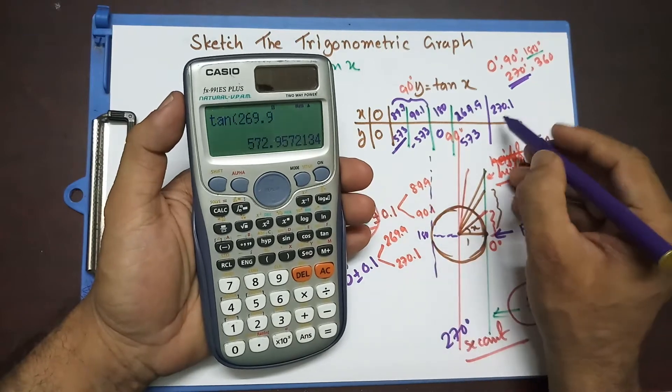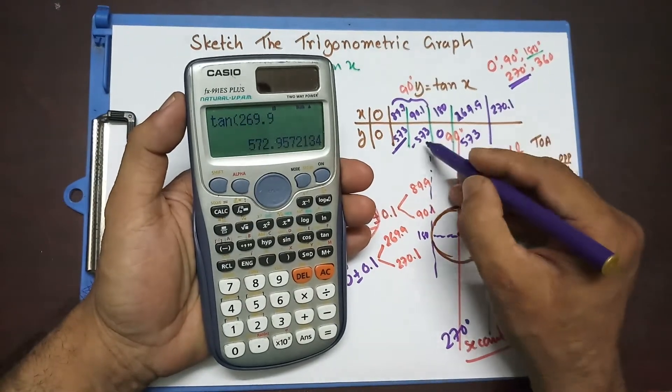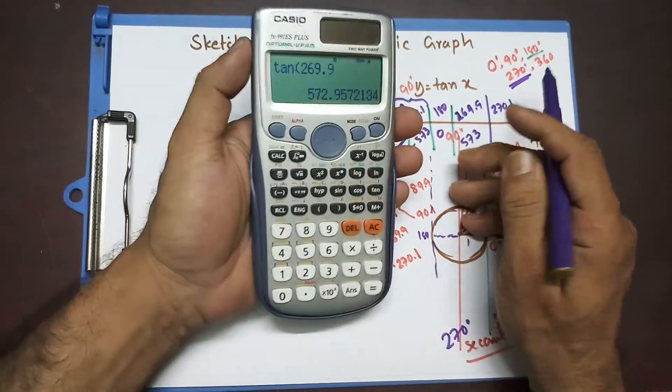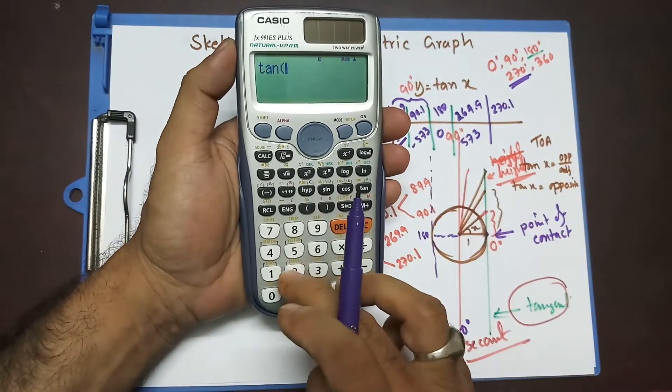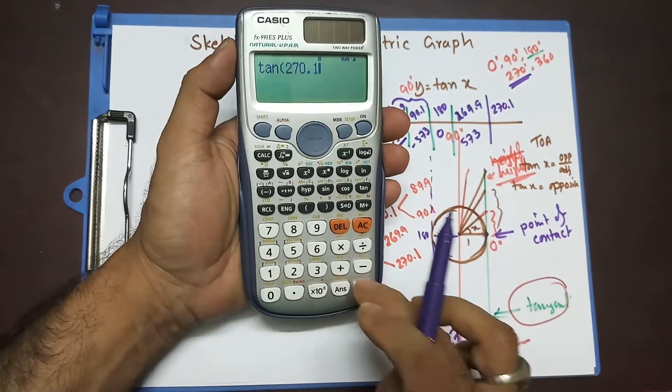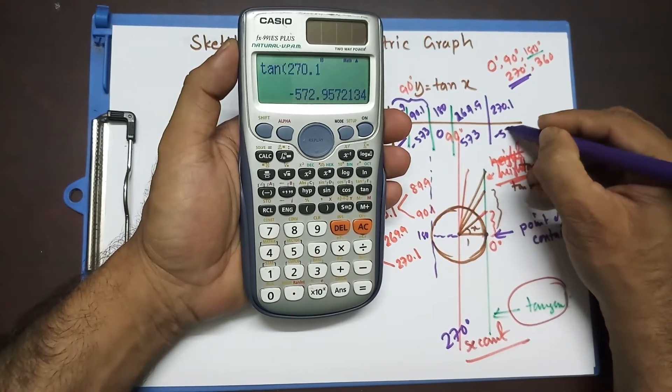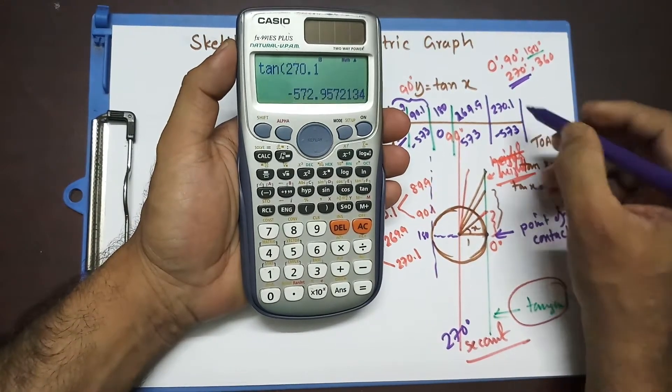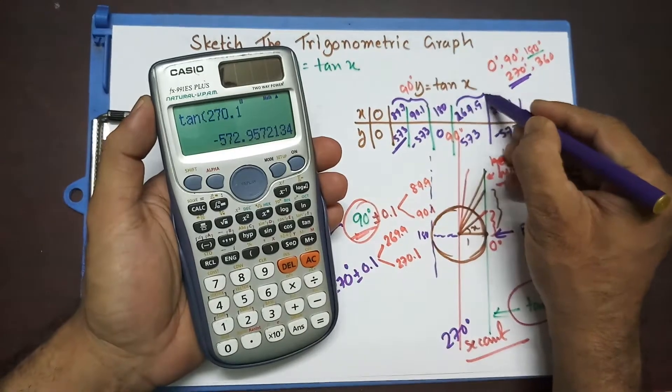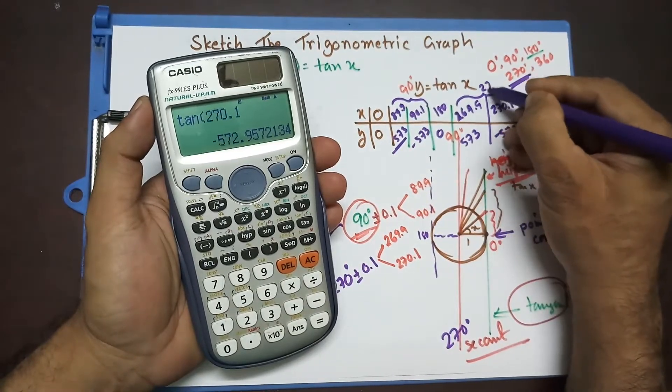Now, my instinct is telling me 270.1 should be this negative 573. But let's try that. Tan 270.1. I'm getting, yes, absolutely right. My guess was right. Minus 573. Now, these two values is replacing 270 degree.